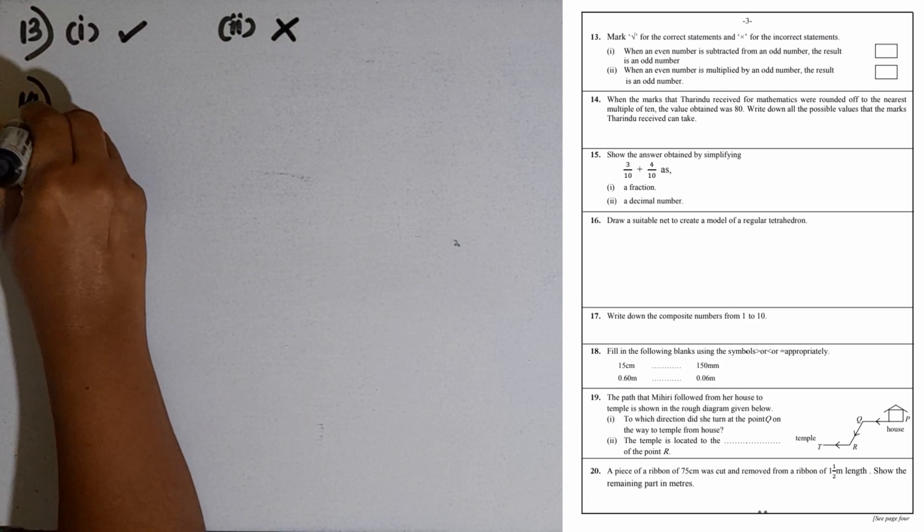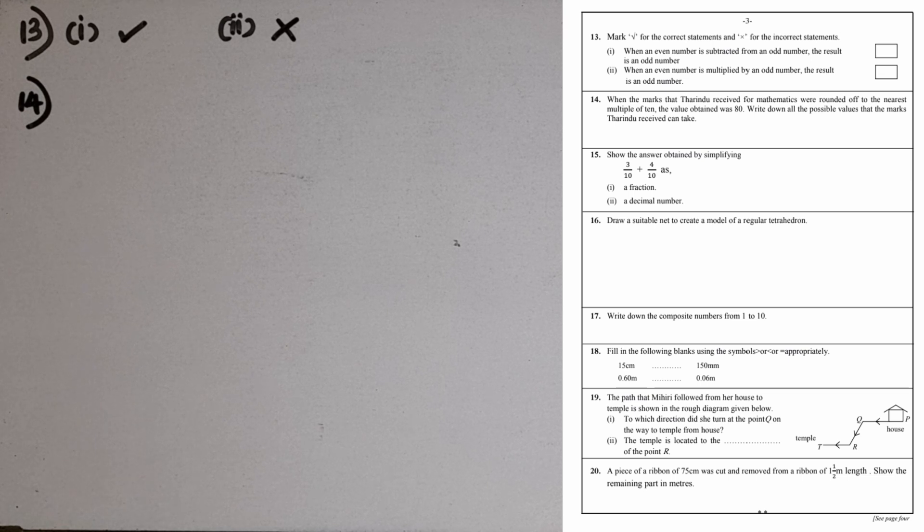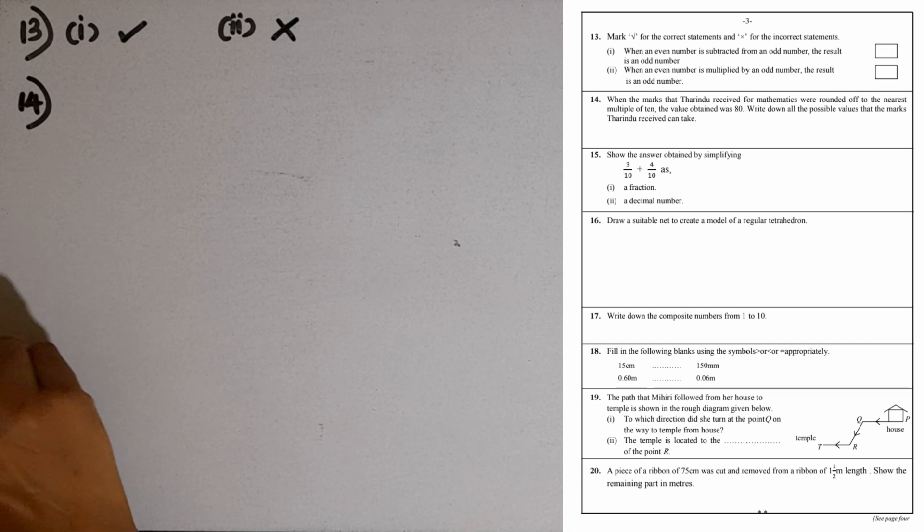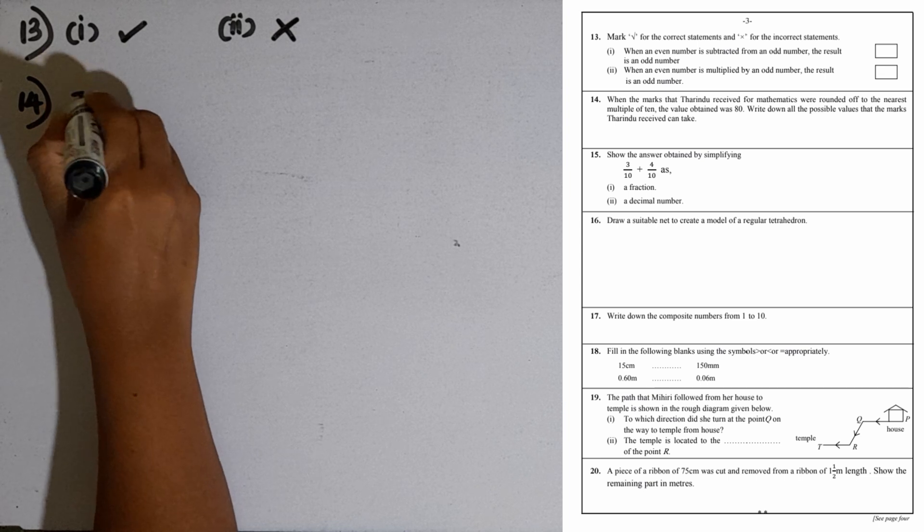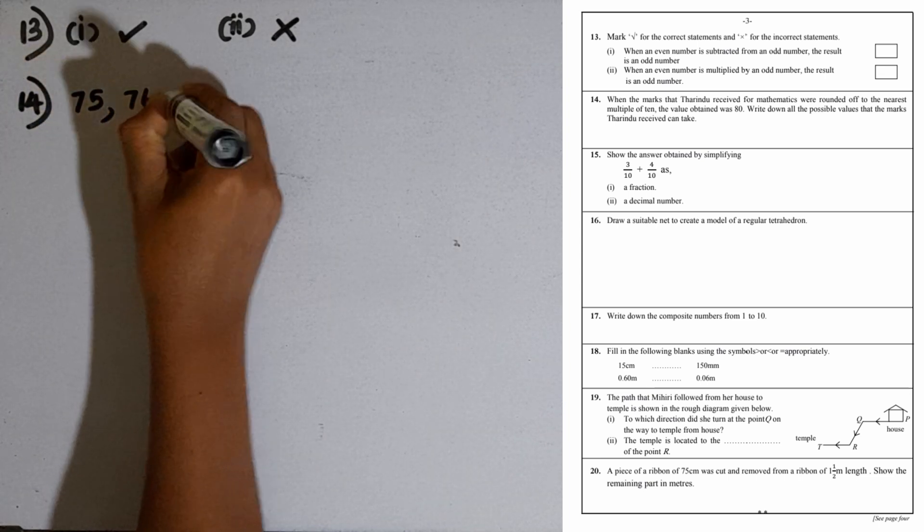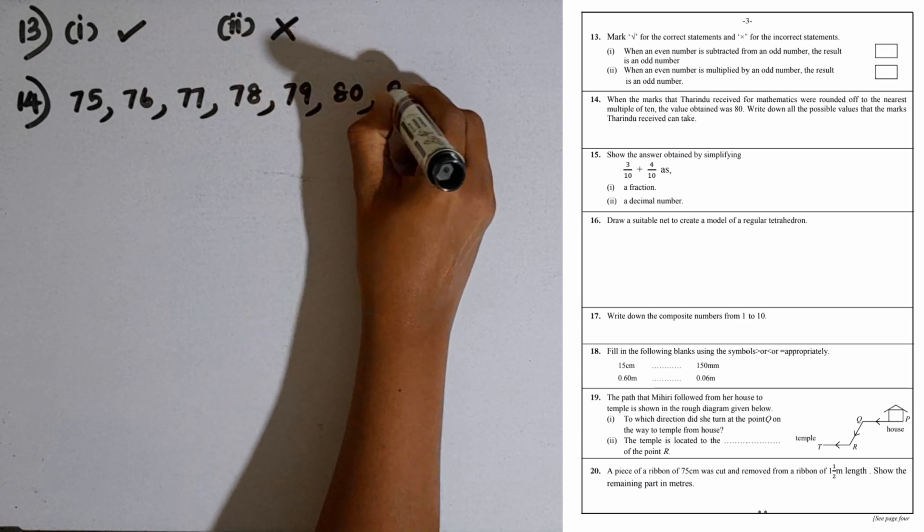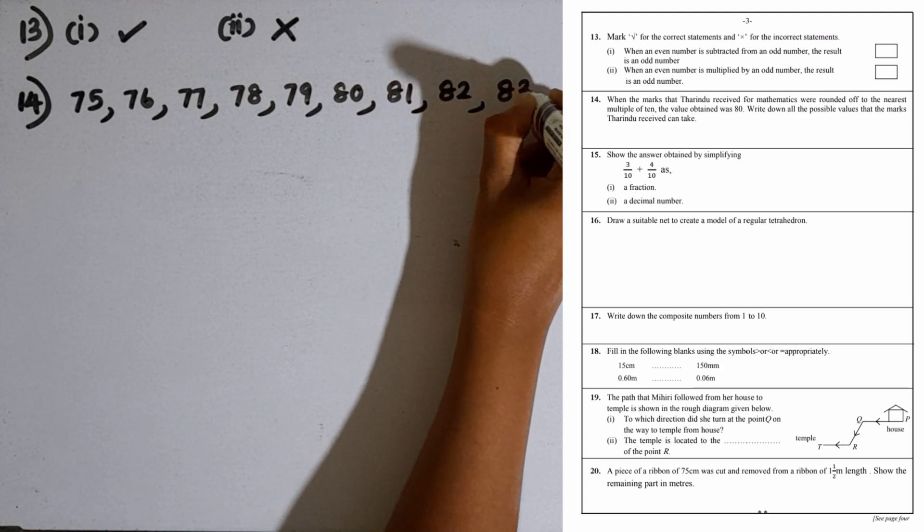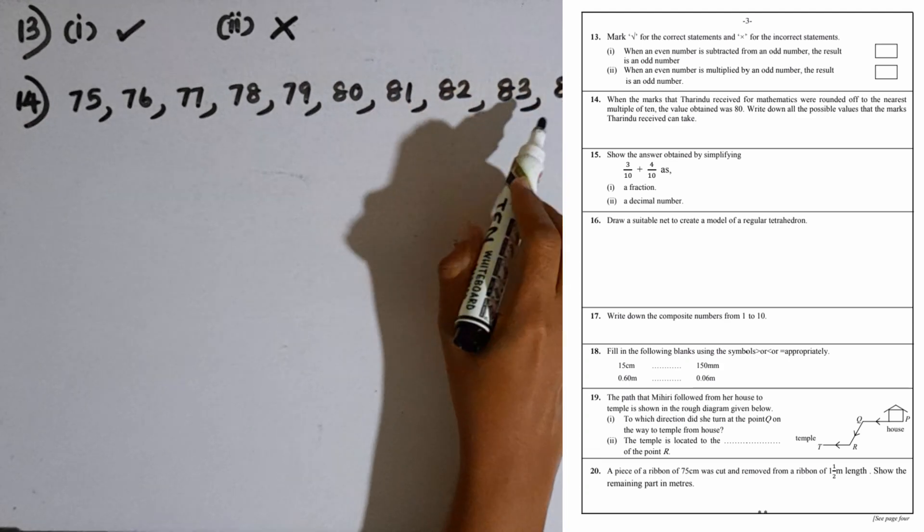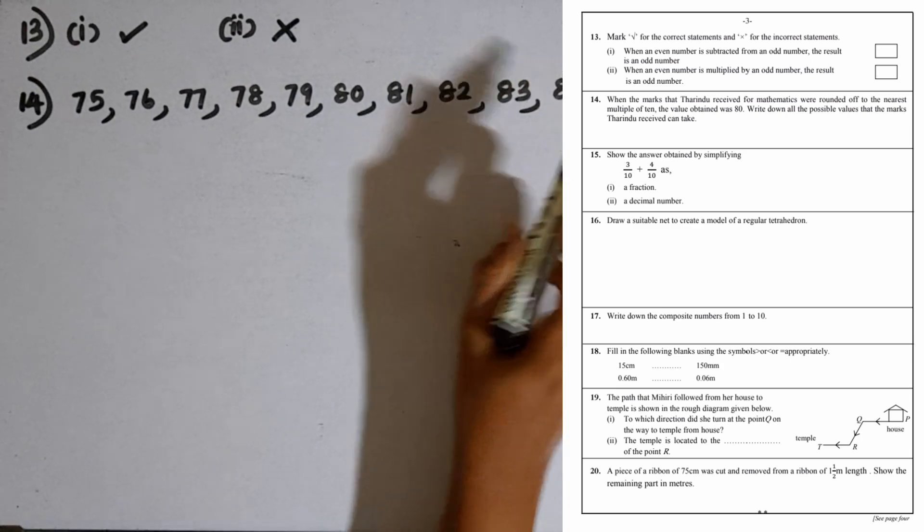Question number 14: We have the numbers 76, 77, 78, 79, 80, 81, 82, 83, 84. We have to stop here. If it goes to 85, it should be rounded off to 90.